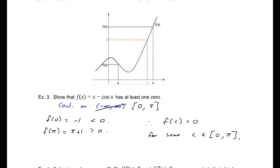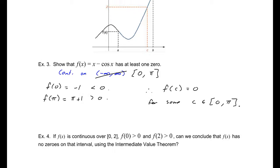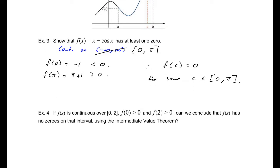Therefore, f of c equals zero for some c in the interval zero to pi. The function is negative somewhere in that interval and positive somewhere in that interval, so it has to be zero somewhere in there. We don't know what the x value is — we could solve for it in the next few chapters. But we can say there is some value. In example 4: if f of x is continuous over zero to two, f of 0 is greater than zero, and f of 2 is greater than zero, can we conclude that it has no zeros in that interval? The answer is no — the Intermediate Value Theorem does not apply in this case.